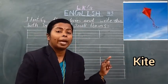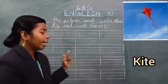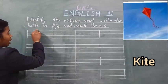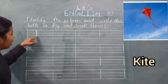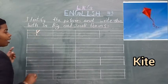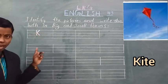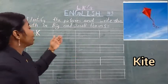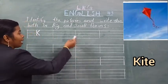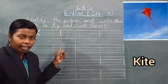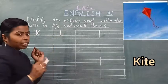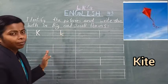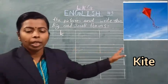Kite — the first letter is K. Capital K kaise likhenge? Standing line from first line to third line, then two slanting lines. This is capital letter K. Small letter K kaise likhenge? Standing line from first to third line, then two slanting lines between second and third lines. K for kite.